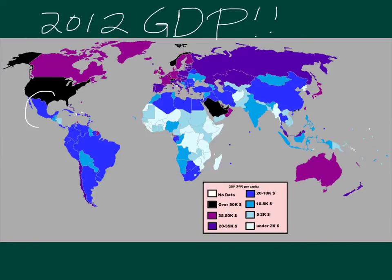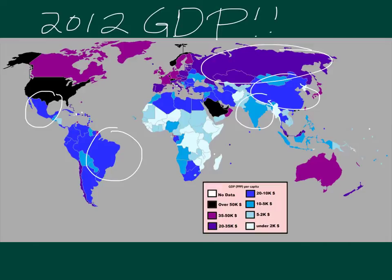Also notice that places like Mexico, India, China, Russia the former Soviet Union, and Brazil are doing very, very well as nations, but still aren't at the level of the most industrialized nations of the world.